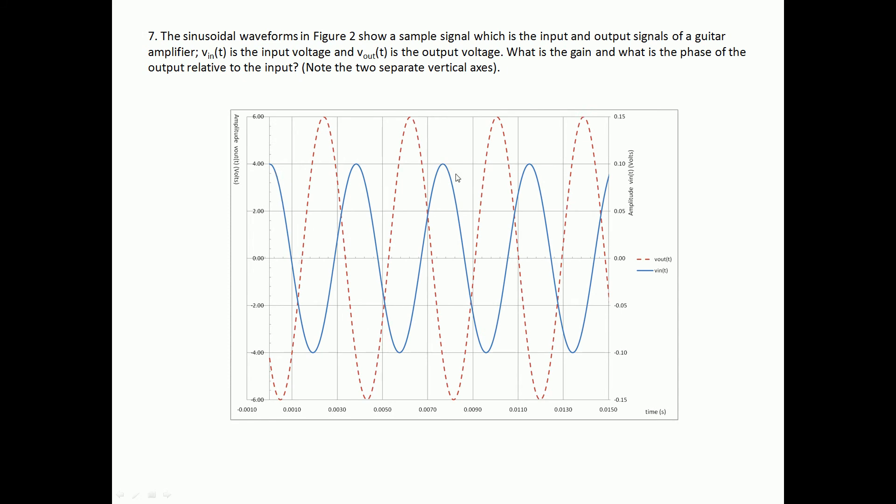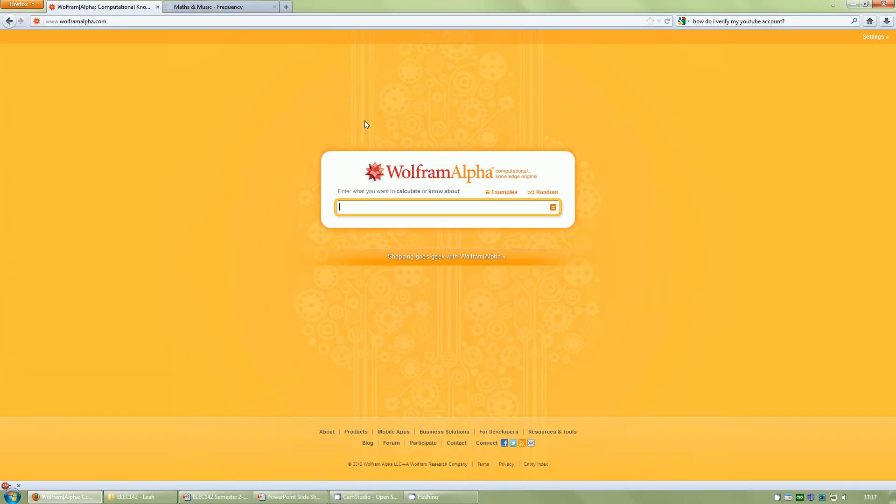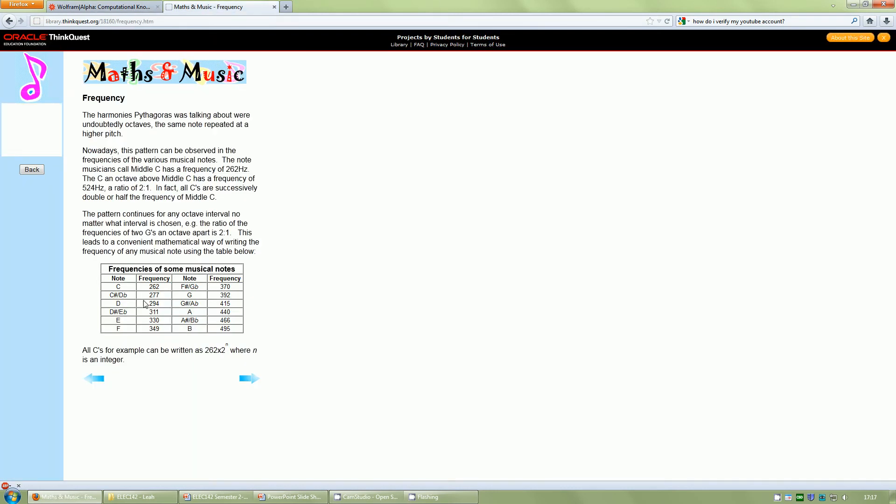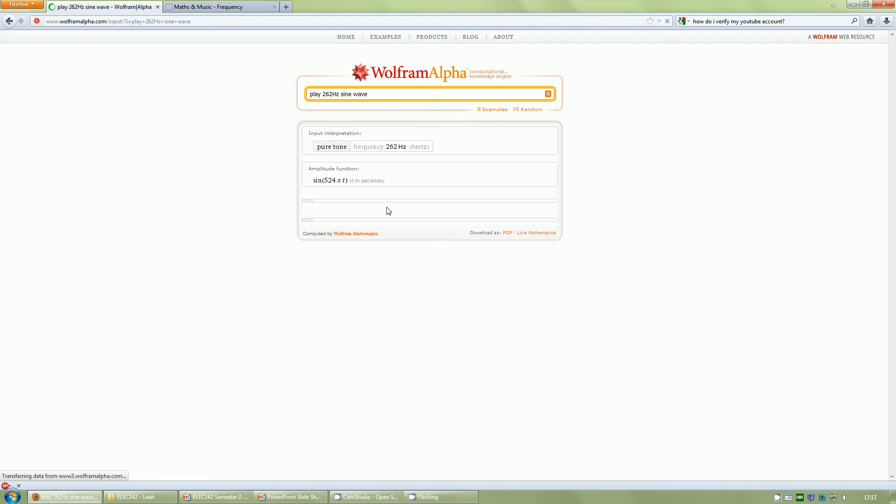The interesting point about the waveform I've chosen is there was a reason for it. These are based on values that you do actually get out of guitar amplifiers. The frequency that we're interested in here is actually the frequency of middle C, that's what I plotted this as. So middle C is actually a frequency of 262 hertz, and you can do quite a cool thing in Wolfram Alpha is you can play a sine wave of 262 hertz and we can hear what that sounds like.